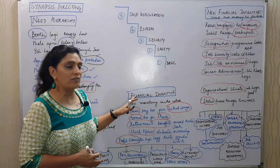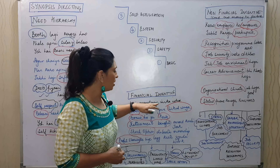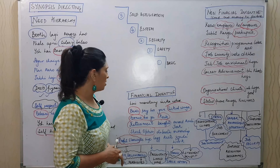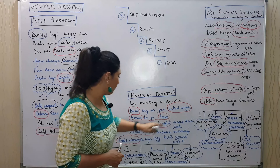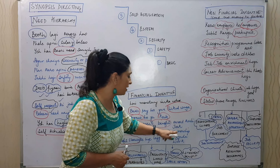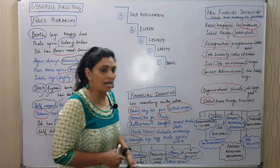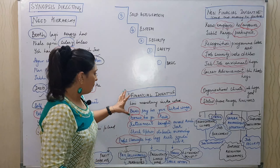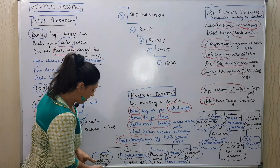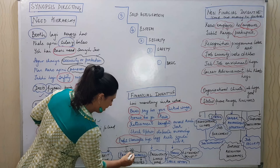Next we are talking about financial incentives. Financial incentives are monetary in nature. The types include: basic pay, productivity-linked wage, bonus, perks, and retirement benefits. Also stock options that give ownership, and profit sharing for which people work harder.